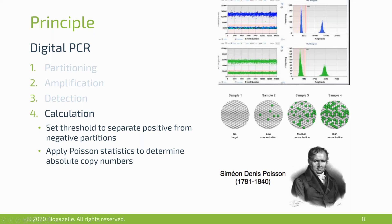With this thresholding you can do the counting, though the count doesn't represent a one-to-one number of molecules present in your reaction. One needs to apply Poisson statistics because a single droplet may in some cases contain multiple template molecules. Using Poisson statistics, one can correct for this and determine a very accurate assessment of the total number of molecules present in your sample at the start of your digital PCR measurement.